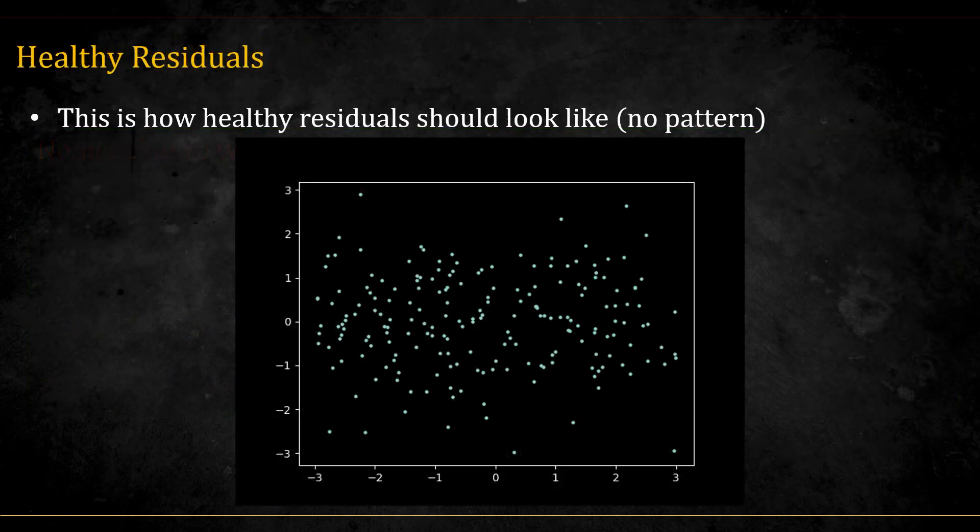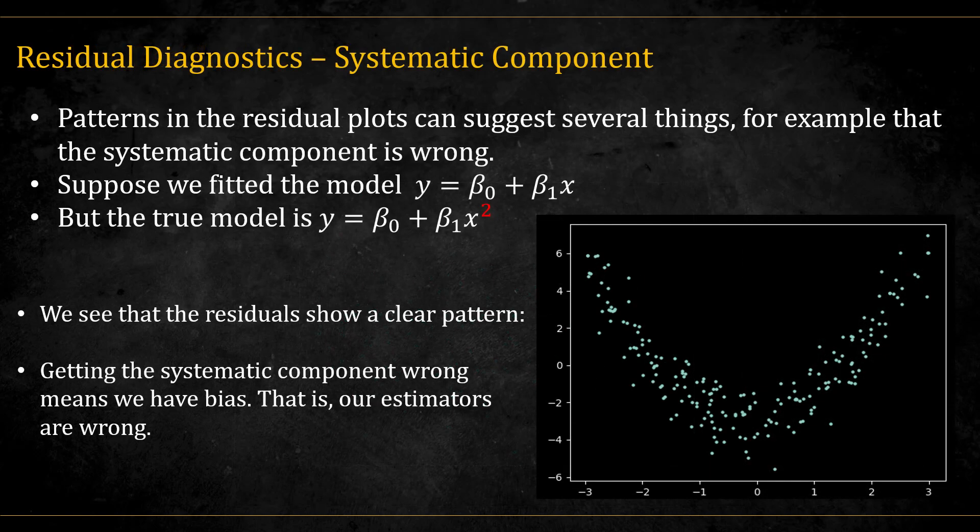Here's how healthy residuals should look like. The x-axis is the predictor, and the y is the residual. There should be no apparent pattern to them, and they should seem with more or less equal spread from the zero mean. If we see a pattern in the residual plot, that can suggest a problem in our model.